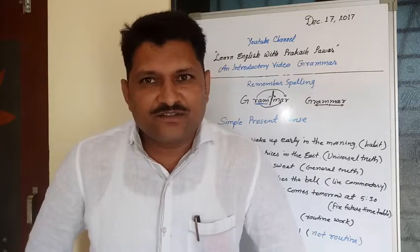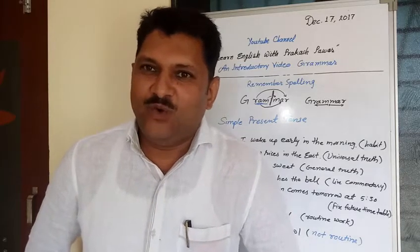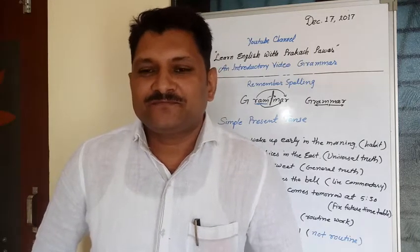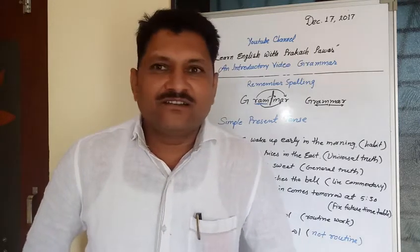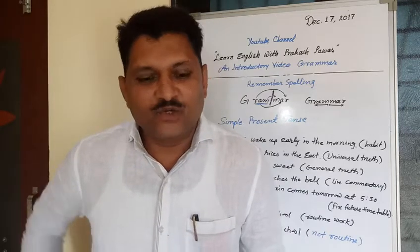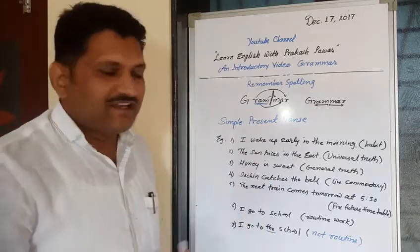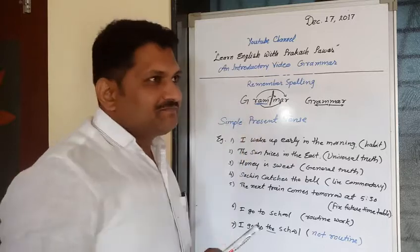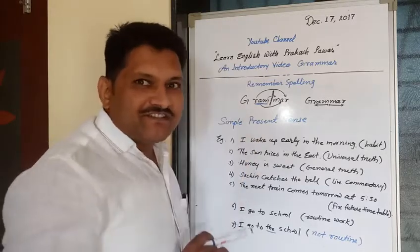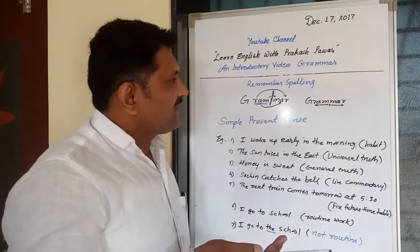Sometimes we write G-R-A-W-M-E-R, G-R-A-W-M-O-R, or G-R-A-W-M-A-R. We get confused remembering the spelling of grammar. I have a trick to remember the correct spelling forever. First, write G — nobody makes a mistake writing G. The mistake comes after, so let me show you the correct way.